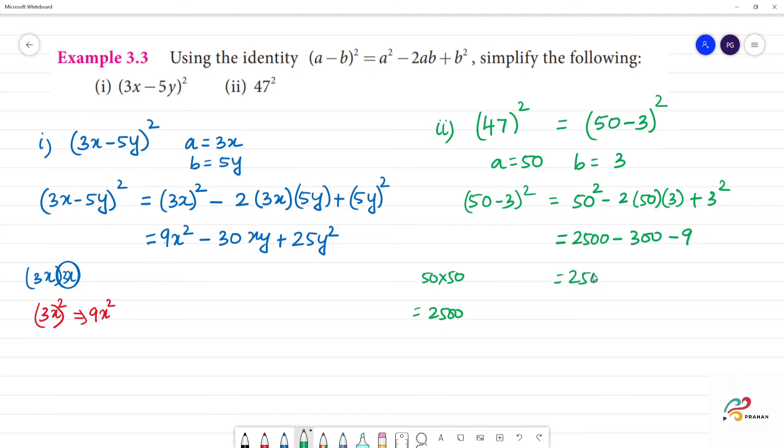2500 minus 309 - that's not true. Sorry, here is plus. So 2500 plus 9 is 2509 minus 300. The answer is 2509 - 300.